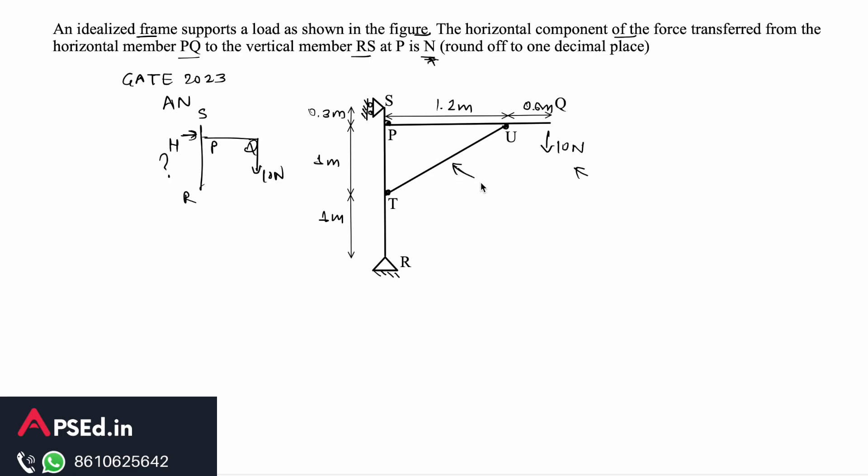But there is an additional member in this structure, that is this UT member which is the link here. Because of this inclined link, there will be or there can be some force horizontally at this point P. Now apart from this basic information, this member UT, both ends U and T are pinned.